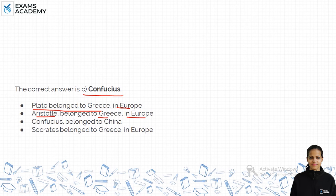Confucius is from China; he's a political philosopher of China. And Socrates was Plato's guru, so he was also from Greece in Europe. So the correct answer is Confucius. Thank you.